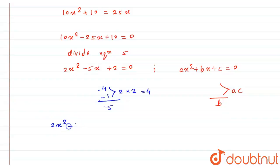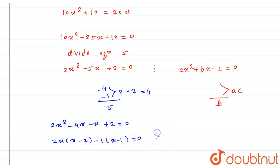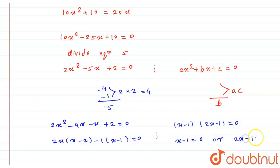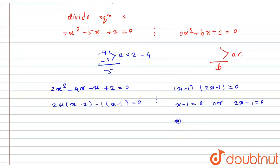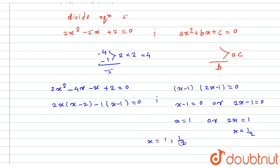So the equation becomes 2x squared minus 4x minus x plus 2 equals 0. Taking 2x common from the first two terms gives 2x(x minus 2), and taking minus 1 common from the last two terms gives minus 1(x minus 2), so it becomes (2x minus 1)(x minus 2) equals 0. From here the two roots are: x minus 2 equals 0 giving x equals 2, or 2x minus 1 equals 0 giving x equals 1 by 2. So x equals 2 or x equals 1/2.